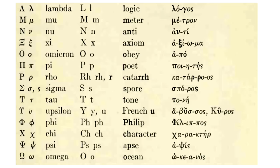Then we have eta, which we remember through the word 'they.' Then we have theta, which we remember through the word 'atheist.' Then we have iota — actually pronounced 'yota,' not 'iota' as we tend to transliterate it into modern English. The word we have to remember this is 'intrigue.'